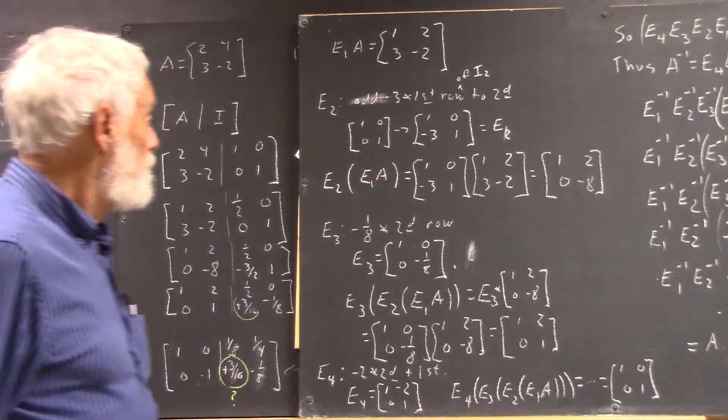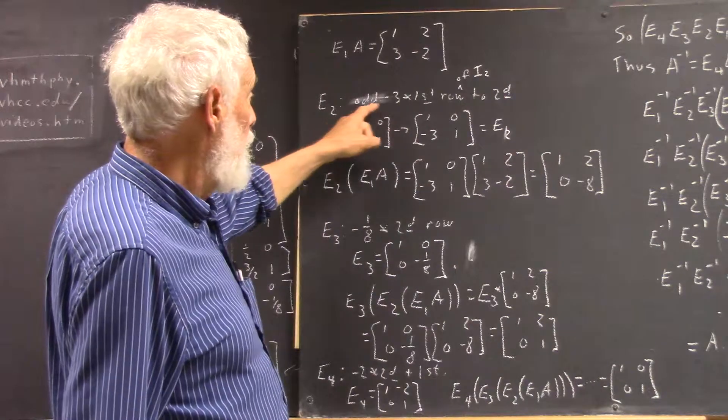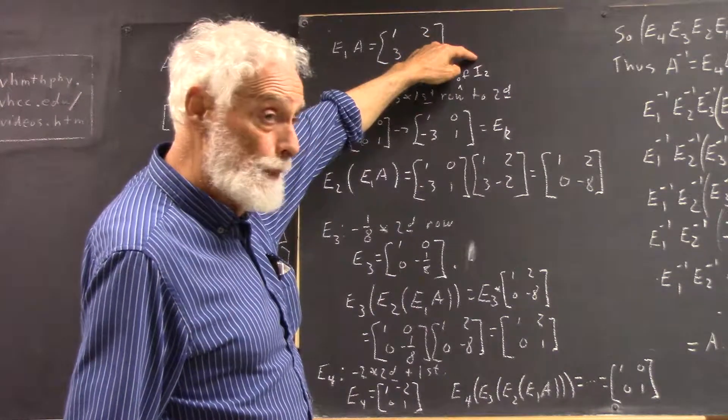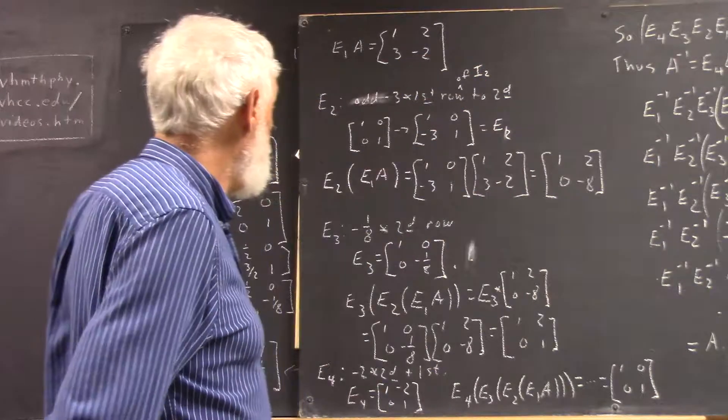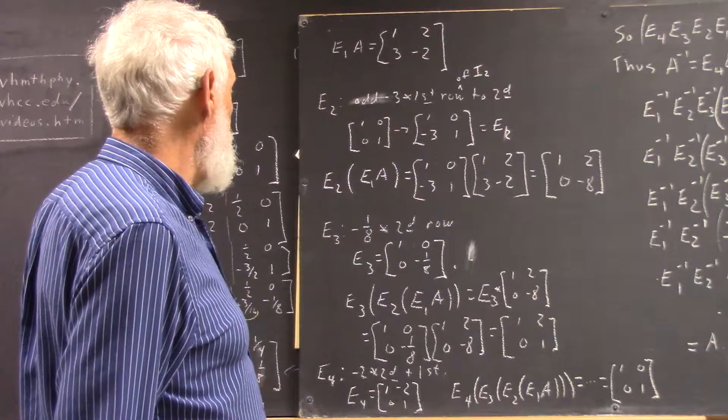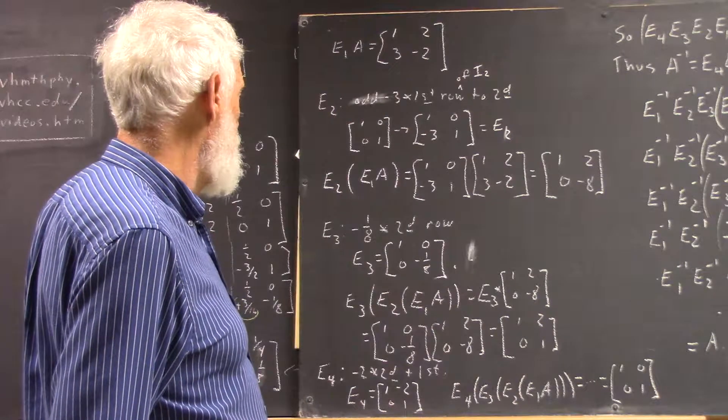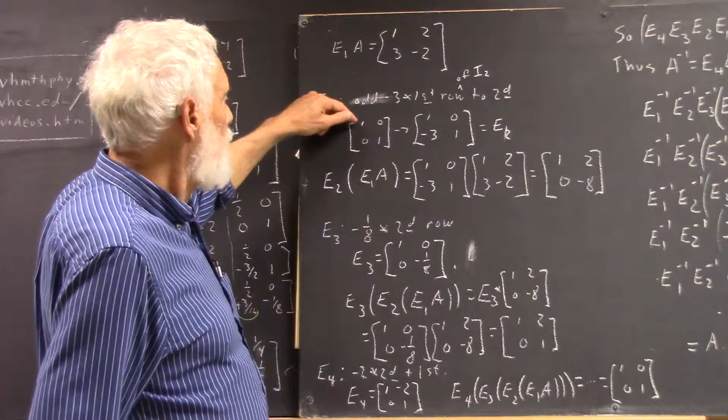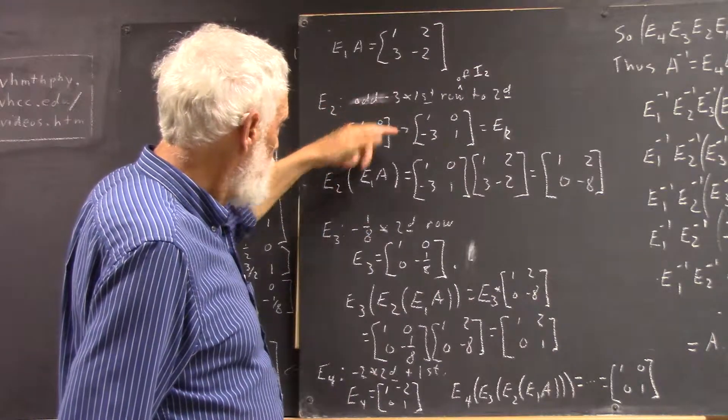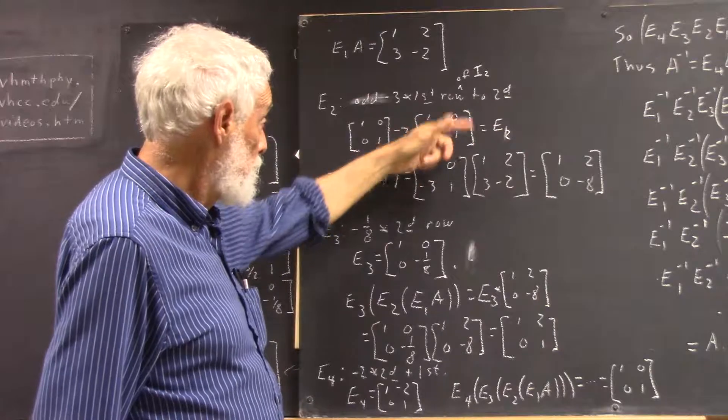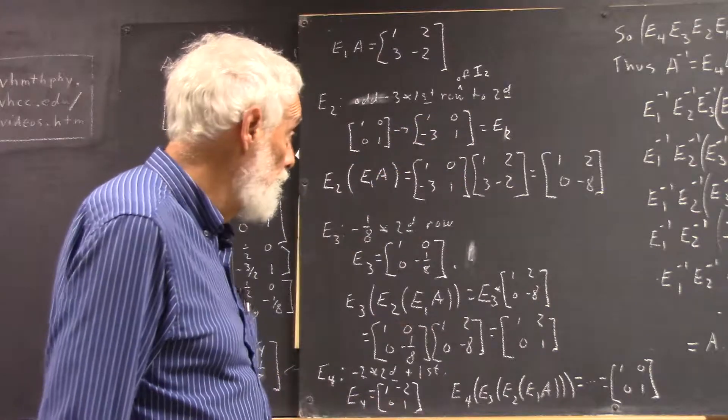Our E2 matrix, we're going to add negative three times the first row of your identity matrix, your two-by-two identity matrix, I2, to the second row. And we do that, and that takes the identity matrix. We add negative three times the first row to the second row. Here's what we get. First row is undisturbed, second row becomes this. That's our E2 matrix.